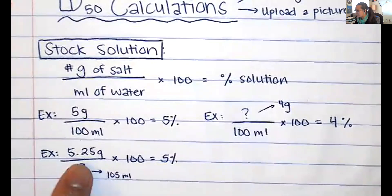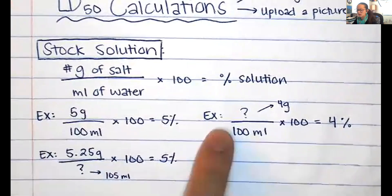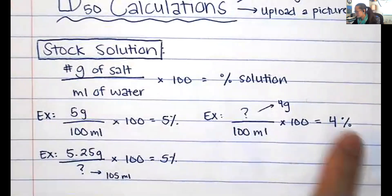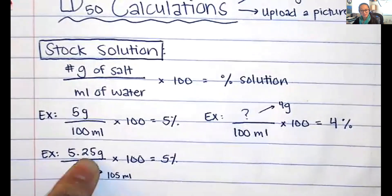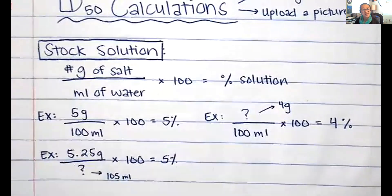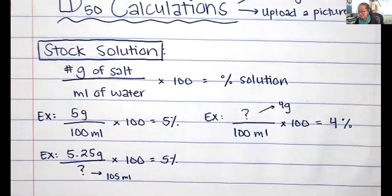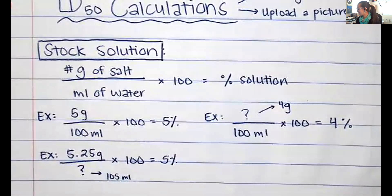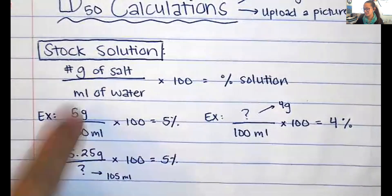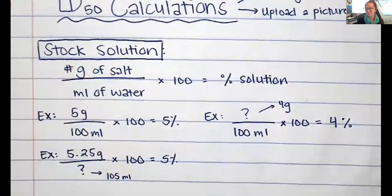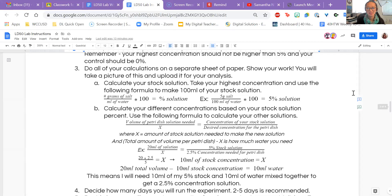The idea is that depending on what you already know — whether you know the percent or the number of grams you want — you're just solving for the missing piece. Please do not go higher than 5% on your stock solution. Your stock solution is simply your highest percentage.